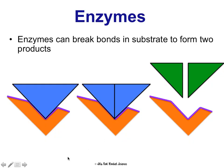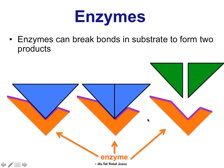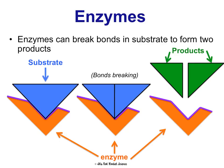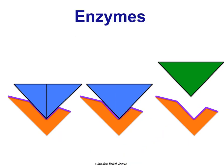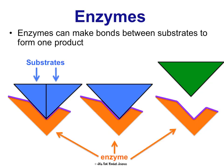Enzymes can either break bonds or make bonds. In one example, we see one reactant coming in and two products being released — bonds are being broken. Enzymes can also help form bonds: with two substrates coming in, bonds form and then one product is released.